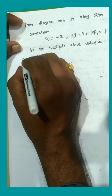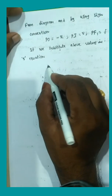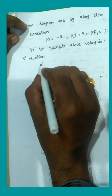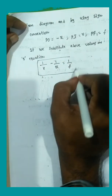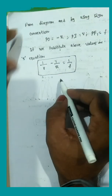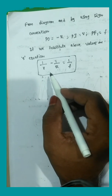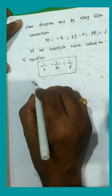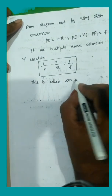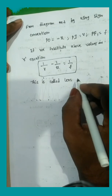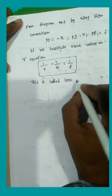Substituting into the fifth equation, we get: 1/v − 1/u = 1/f. This is the lens formula. This lens formula can be used for any lens.